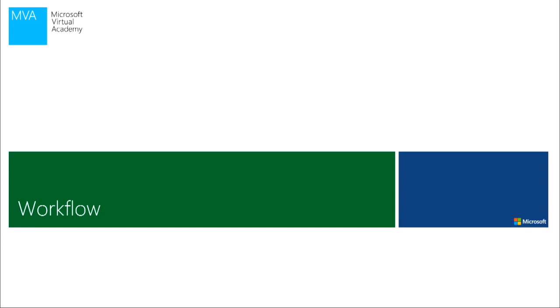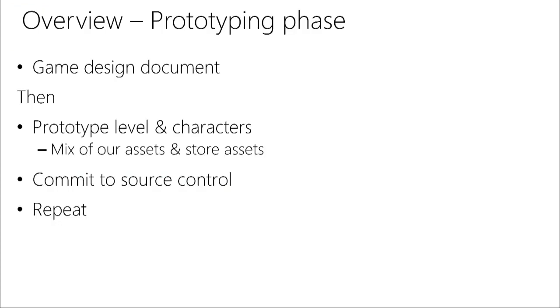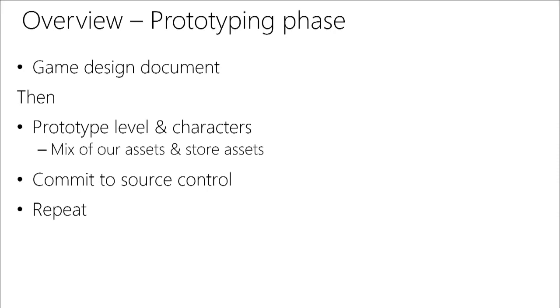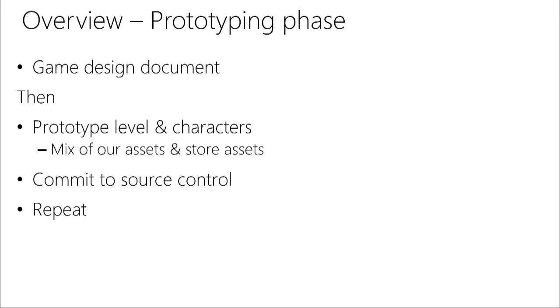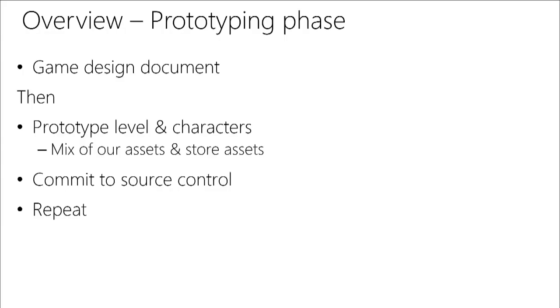Let's talk about our development workflow. We start with a game design document, then prototype our level and characters — almost always a mix of things we create and stuff from the Asset Store. Professional studios commonly use Asset Store content, whether for scripts, editor scripts to extend Unity's interface, audio files, or models. After prototyping, we commit to source control and repeat. You really only need the assets and project settings folders in source control.